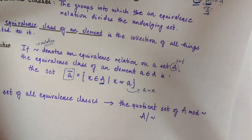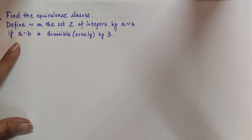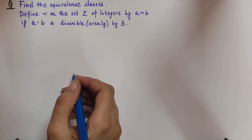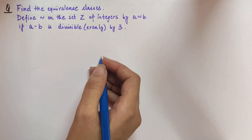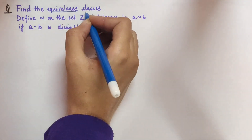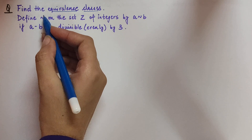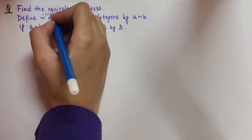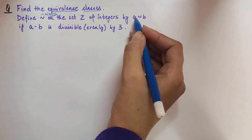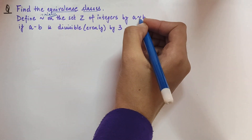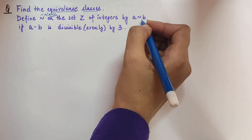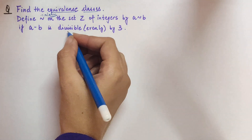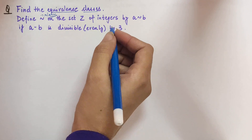Now that we understand equivalence relations and equivalence classes, let's move on to some questions. The first question says: find the equivalence classes for the relation defined on the set Z of integers by: a ~ b if a minus b is divisible by 3 — meaning evenly divisible by 3.